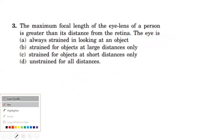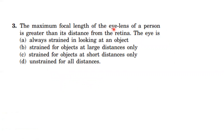The maximum focal length of the eye lens of a person is greater than its distance from the retina. For a normal eye, the maximum focal length of the eye lens is equal to the distance between the eye lens and the retina — that is exactly how it is focused. If it is at a long distance, the eye is very strong.